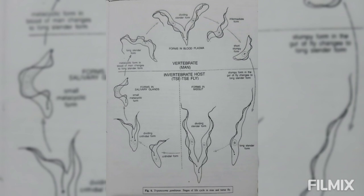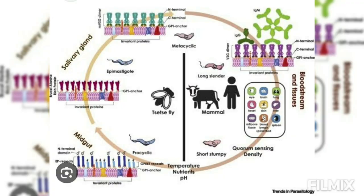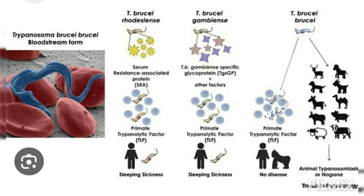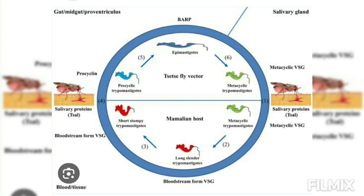At this stage, the mitochondrial activity is again suppressed. When the tsetse fly bites a healthy person, it transfers the metacyclic forms along with saliva into the blood, where they initiate another infection.